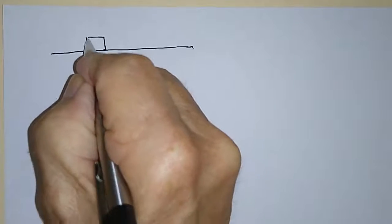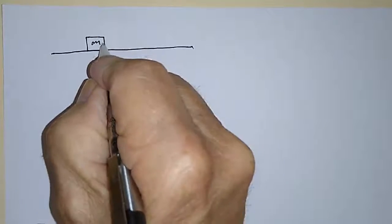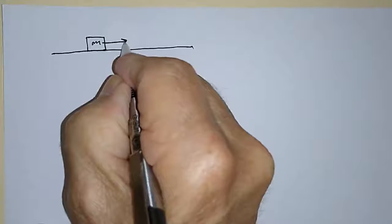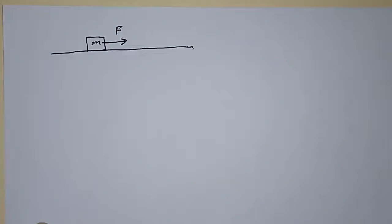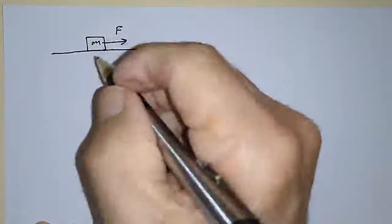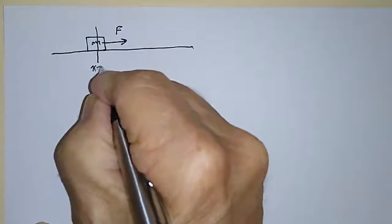the plane, represented by this box here. This is mass M and we're going to exert a constant force in this direction. There's no friction, so this mass is going to start off at X equals zero